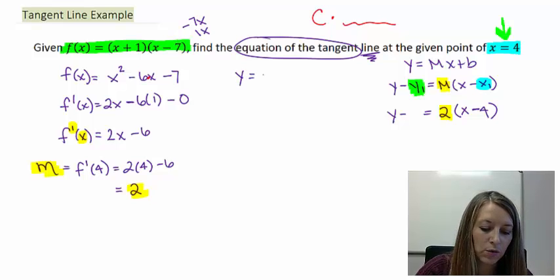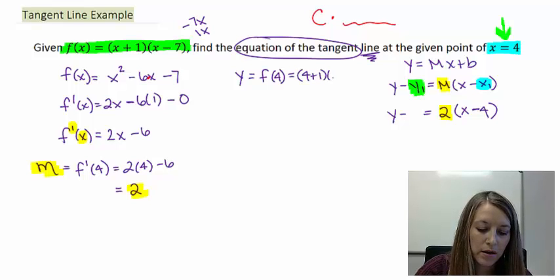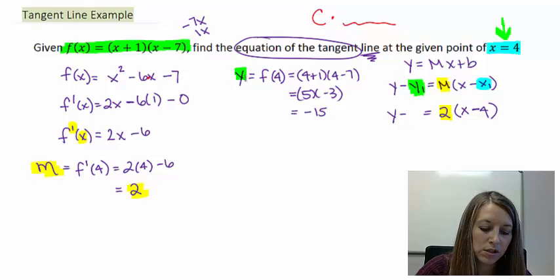The way that we find our y value is we plug in our point in question into our original equation. So y = f(x), or in this instance, f(4). That gives me (4 + 1)(4 - 7) = 5(-3) = -15. So that's what I'm going to substitute in for my y value.